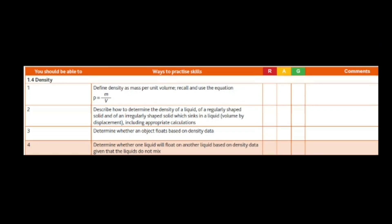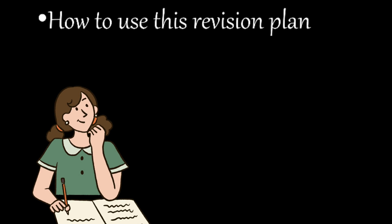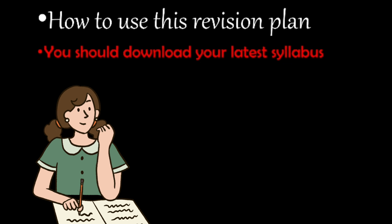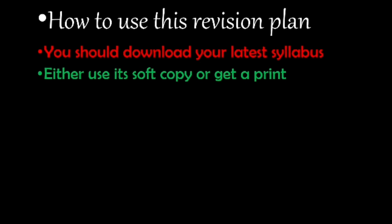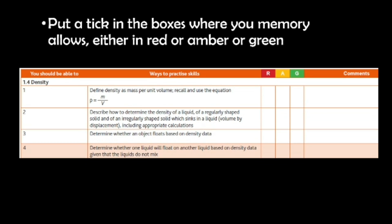These are forces, speed, and time. I'm not going to read all of them because it will take lots of time — you can read them on your own. To use this revision plan: first, download your latest syllabus, either use its soft copy or get a print. Then put a tick in the boxes where your memory allows, either in red, amber, or green.